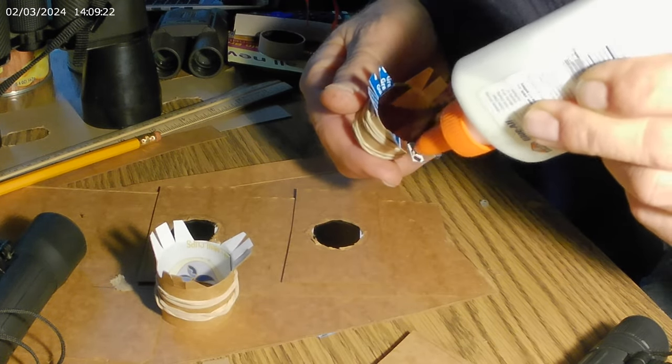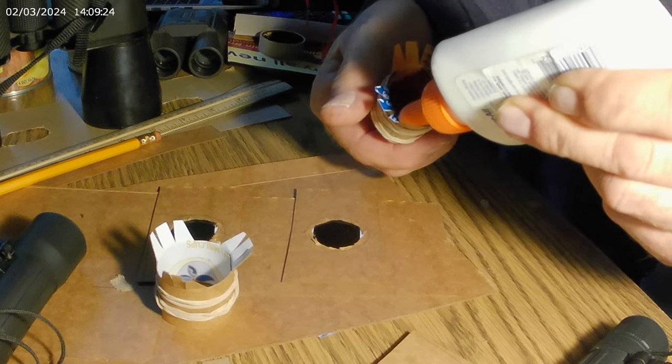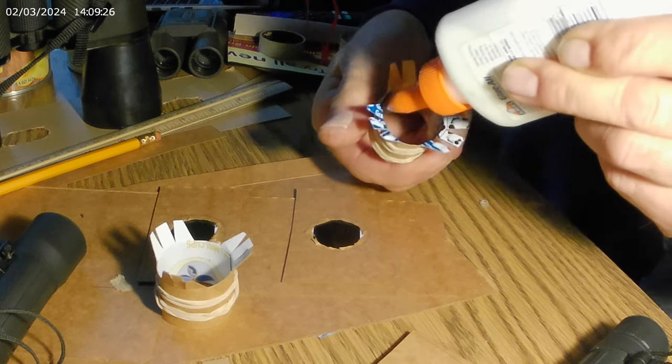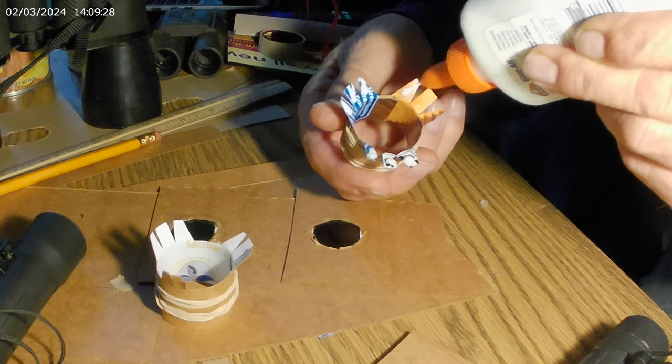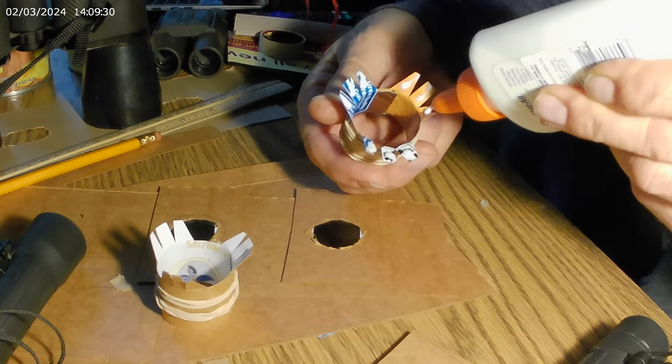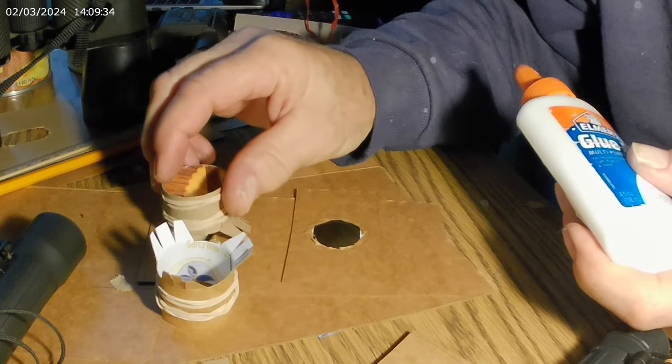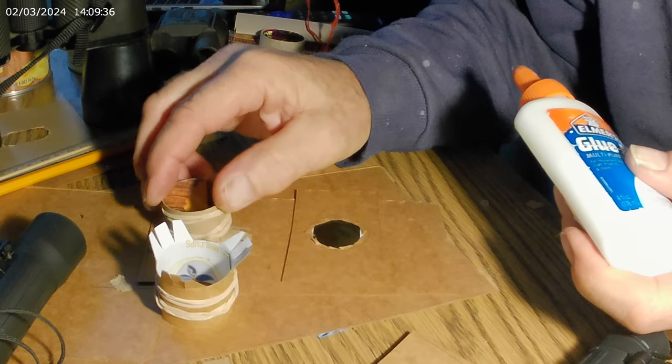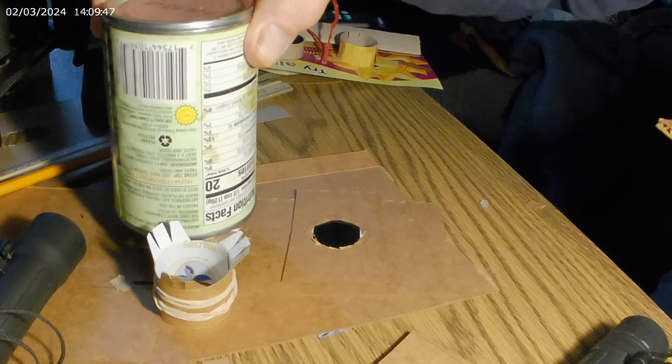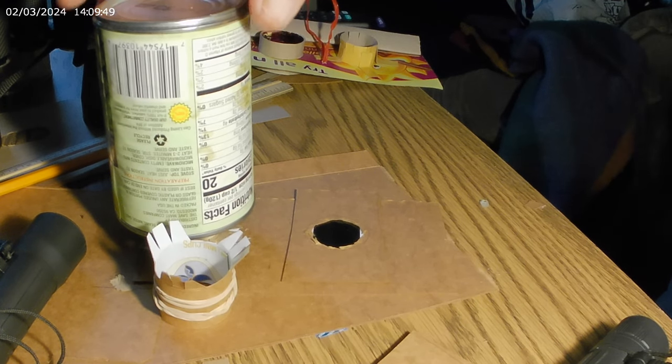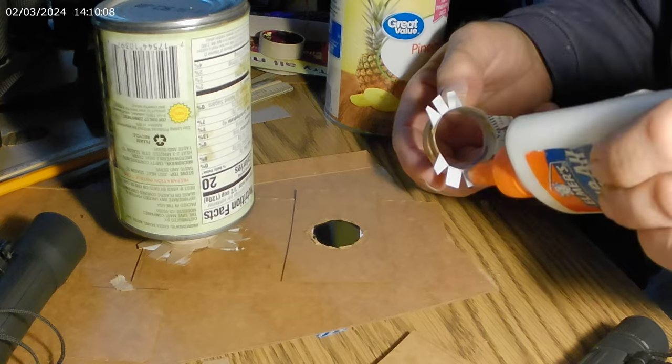And you're going to put some glue on the tabs. And you're going to center it right over the center of the hole. And put a weight on it to hold it down. And then do the same thing to the other side.